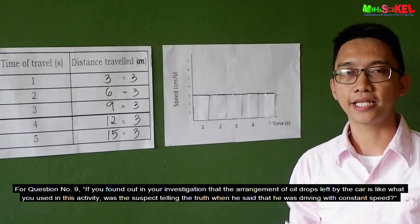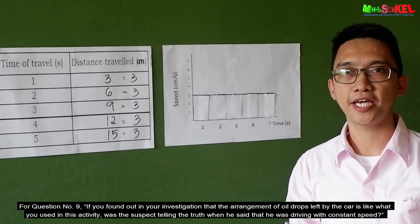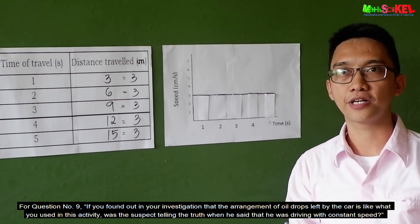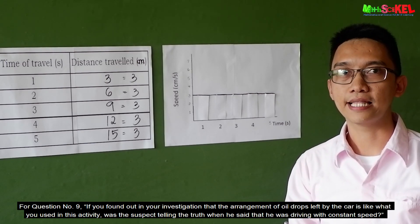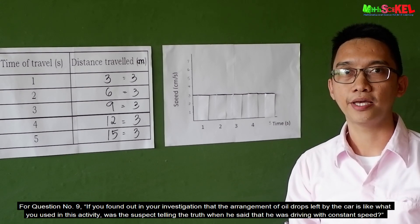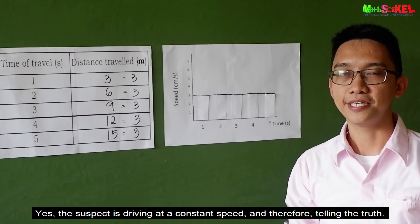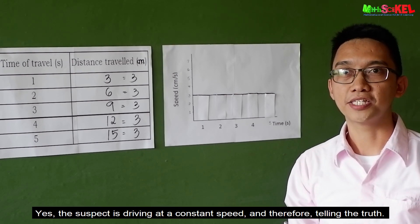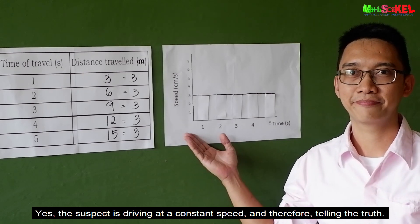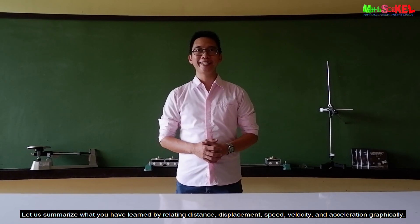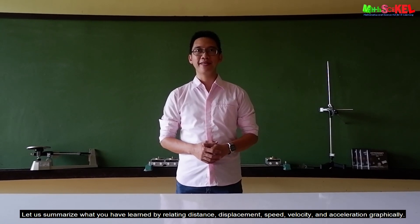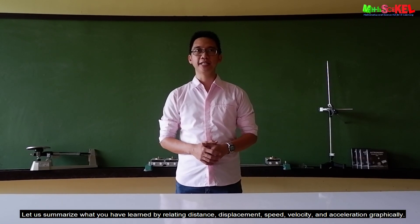For question nine, if the arrangement of the oil spots left by the car matches what we used in this activity, was the suspect telling the truth when he said he was driving at a constant speed? Yes, the suspect was indeed driving at a constant speed. Let us now summarize what you have learned by relating distance, displacement, speed, velocity, and acceleration graphically.